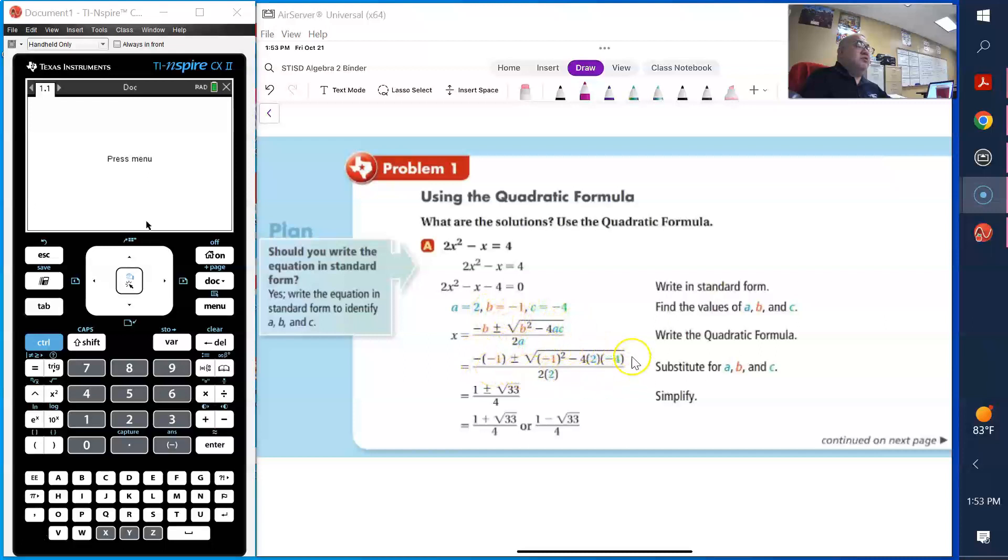So once we simplify, we get these two answers. We have 1 plus or minus the square root of 33 divided by 4. Or you can write it as 1 plus the square root of 33 over 4, or 1 minus the square root of 33 over 4.